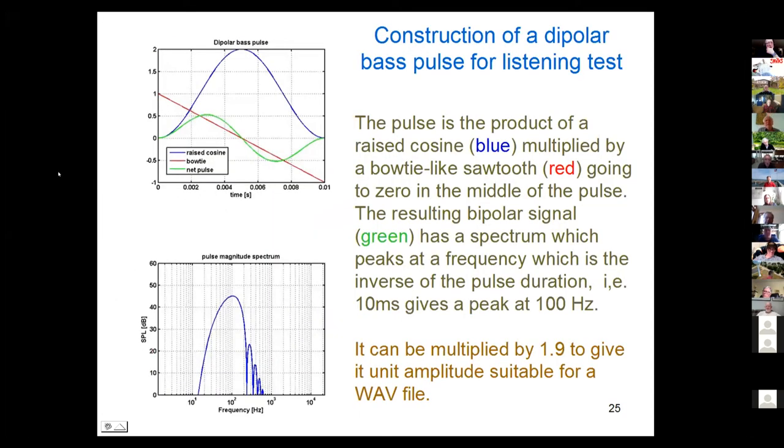Here were my test signals that I could listen to on a headphone. If I take a raised cosine and multiply it by a bow tie, which is plus 1 going to minus 1, zero in the middle, I end up with the green curve. The green curve is what I wanted - a dipolar pulse that has a nice starting and finishing. It has a spectrum with a maximum at about 100 hertz.